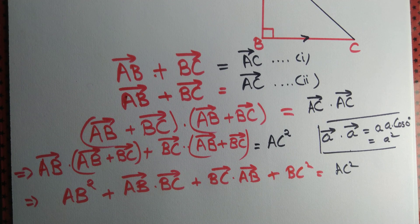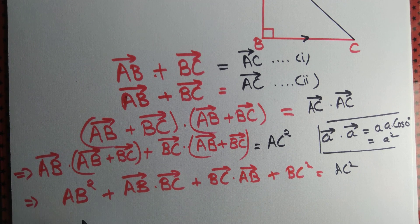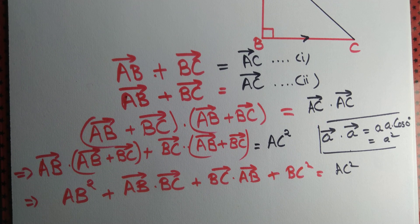Now let's look at the expression that we need to derive. We have AB square, that is perpendicular square, BC square is base square, AC square is hypotenuse square.